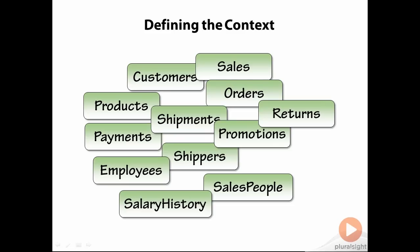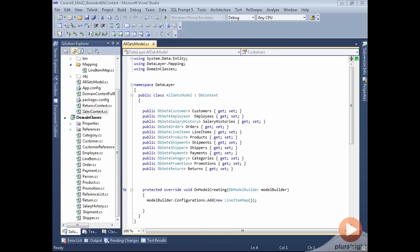When defining an entity data model and entity framework, we often just create a single context to expose all of those classes. Here's how that might look in code. I have a db context that exposes a db set property for every single one of those classes in my application.